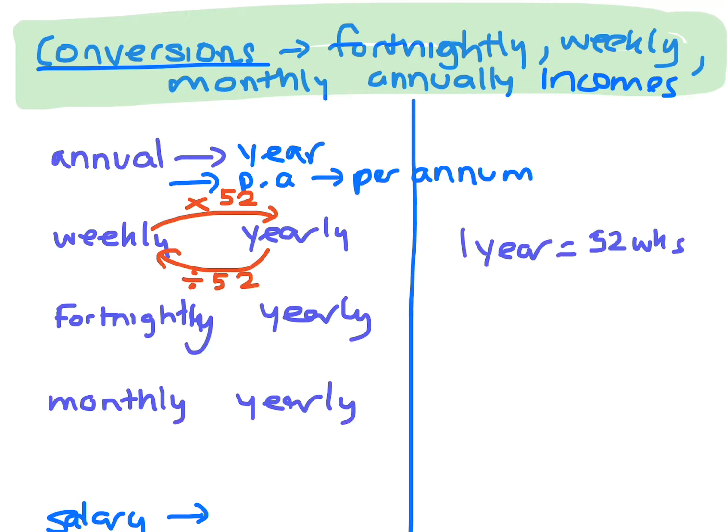If you're going from fortnightly to annually, then you have to times by 26. But if you're going backwards, you divide by 26.